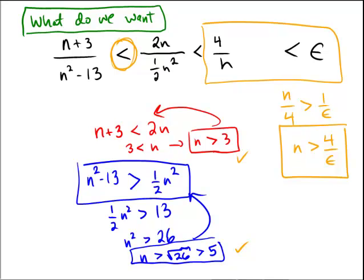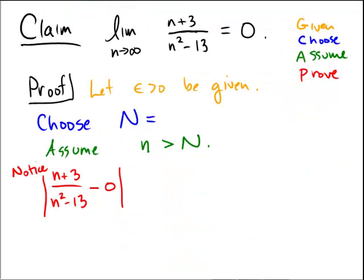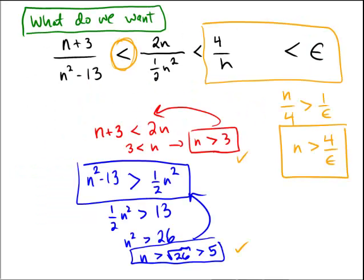So now we're actually ready for the proof. We're going to come over here and we're going to have to say, let capital N be the maximum. We need it to be large enough. And how large do we need it? We have to be bigger than 3, bigger than 5, and bigger than 4 over epsilon.